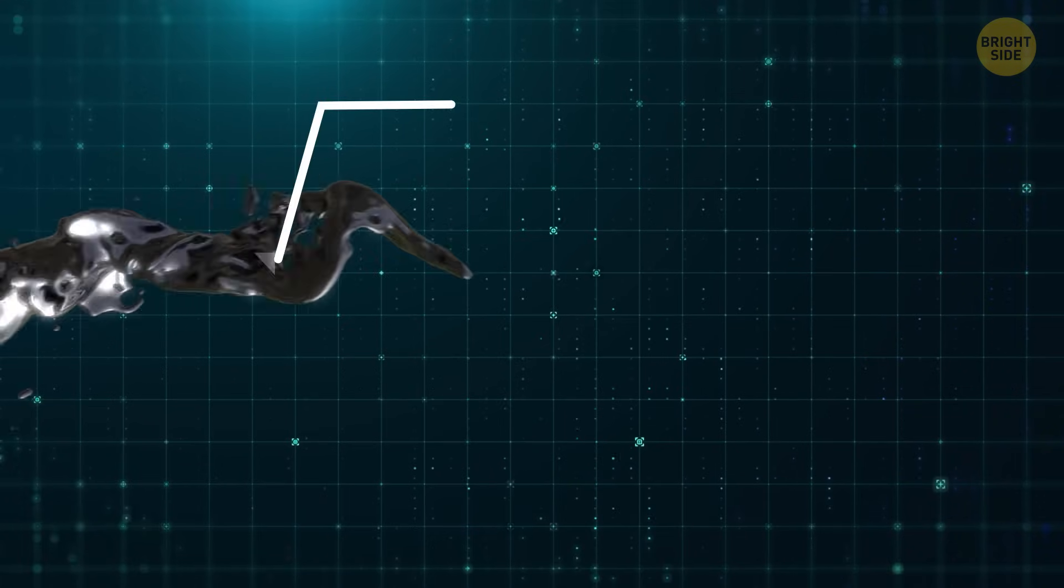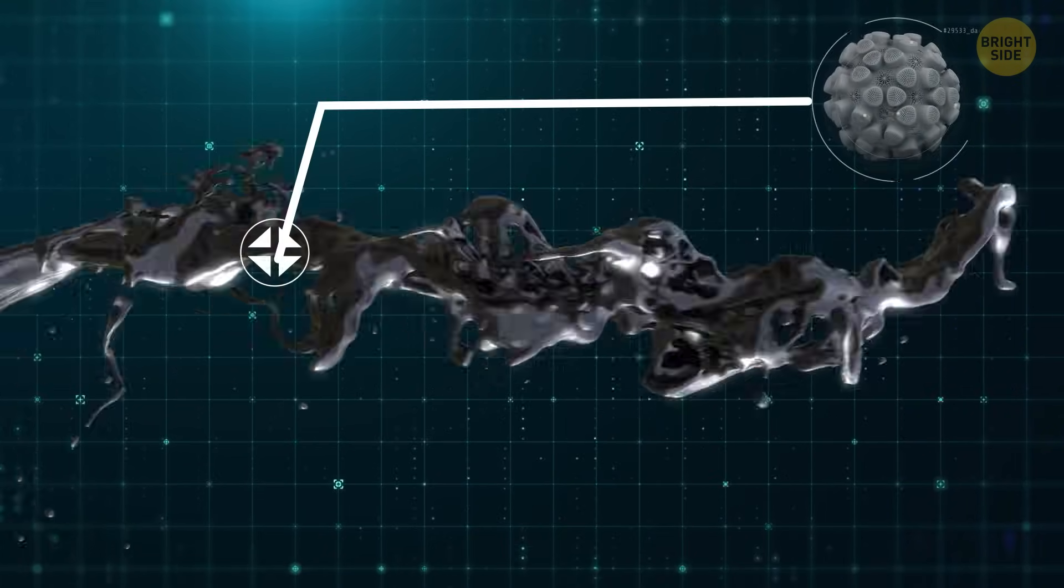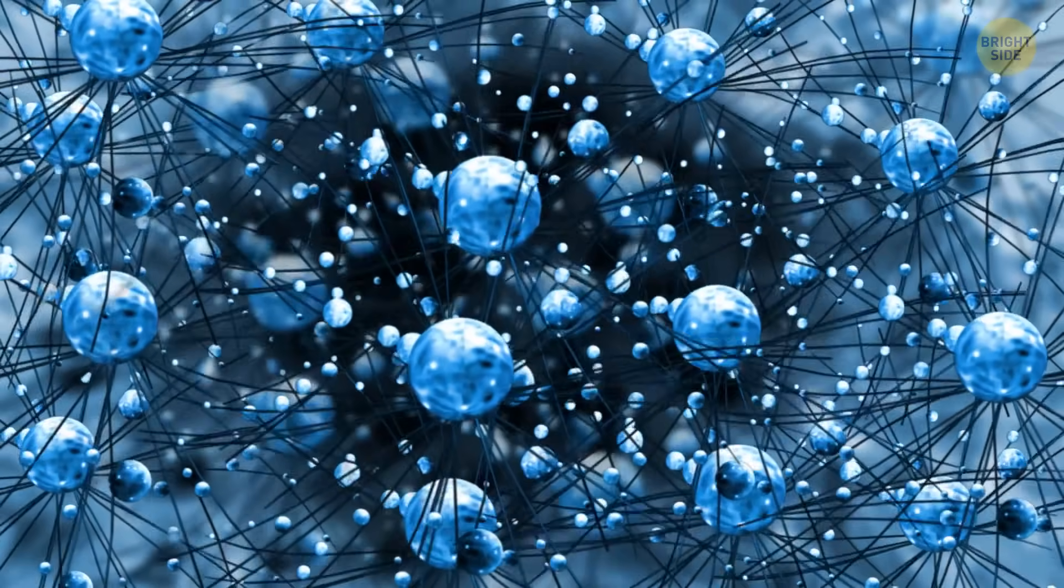First, these nanobots aren't fully independent. They rely on external triggers, like UV light or specific temperature changes, to function. Without human intervention, they'll just sit there like tiny, useless paperweights.